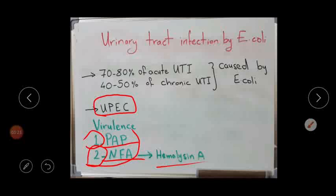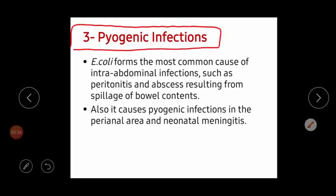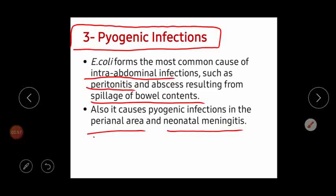The third disease is pyogenic infections. E. coli is associated with many pyogenic infections that occur in the intra-abdominal region, such as peritonitis and abscess resulting from spillage of bowel contents. It may also cause infections in the perianal area and neonatal meningitis. One of the important causative agents of meningitis during the neonatal period is E. coli — keep this in mind.